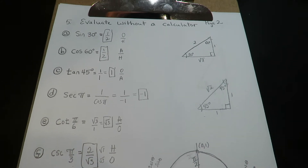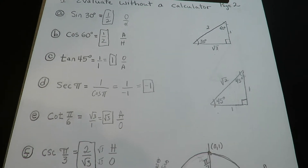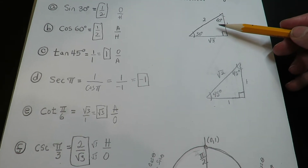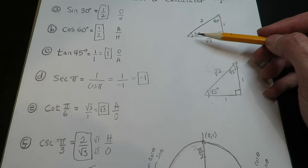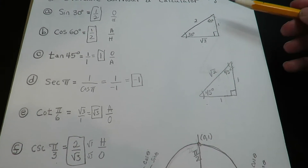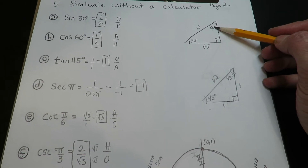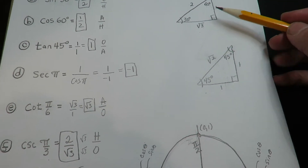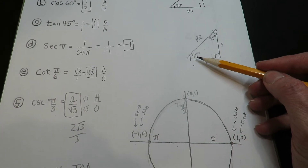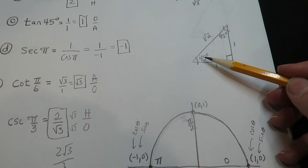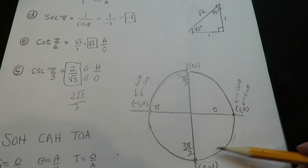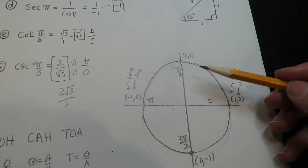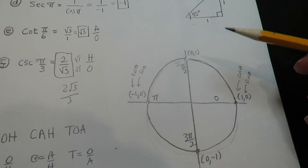So just a quick review: when you're going to evaluate angles without a calculator, there are a couple of different tools you can use. The 30-60-90 triangle will help you calculate any of the six trig functions for 30 degrees or 60 degrees. The 45-45-90 triangle lets you evaluate all six trig functions for 45 degrees. And the unit circle is for quadrantal angles — so if you have something like zero, pi over two, seven pi, or nine pi over two, any whole pies or fractional pies, you can use the unit circle.